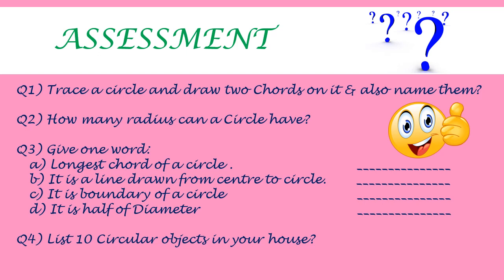Question 2: How many radii can a circle have? Question 3: Give one word — read the statement and identify the term. A: Longest chord of a circle. B: It is a line drawn from the center to the circle. C: It is the boundary of a circle.